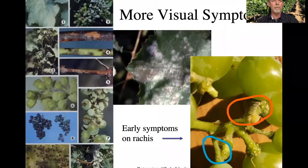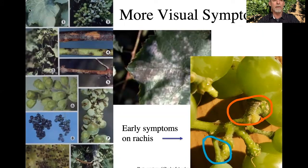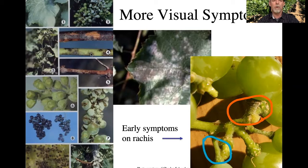Here are some additional symptoms that you might recognize or not recognize depending on where you've looked. As powdery mildew progresses it covers the entire leaf or the entire cluster of berries, so much so that at this point the plant is in very bad shape. If you look at the stems or canes you'll notice they can form black spots, which are also symptoms of powdery mildew.